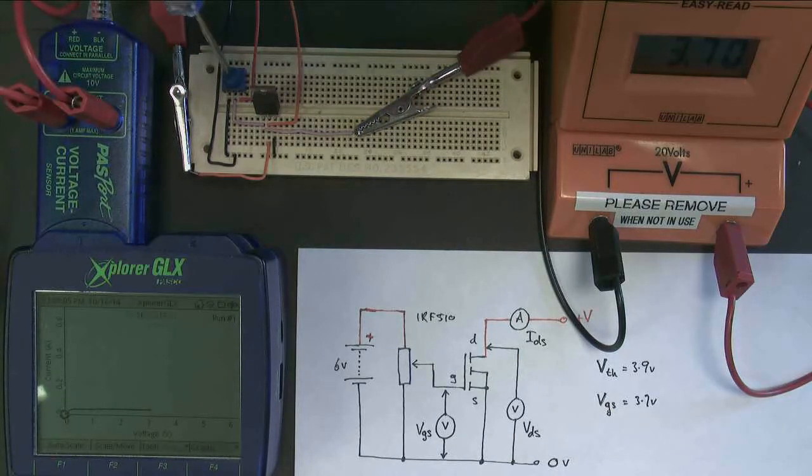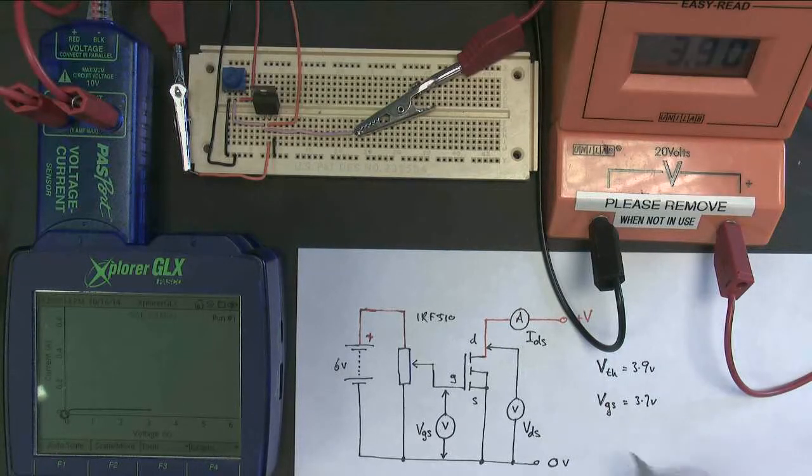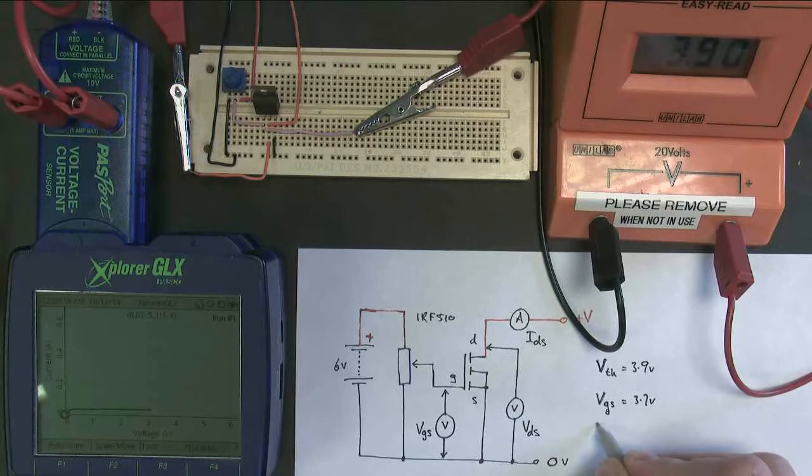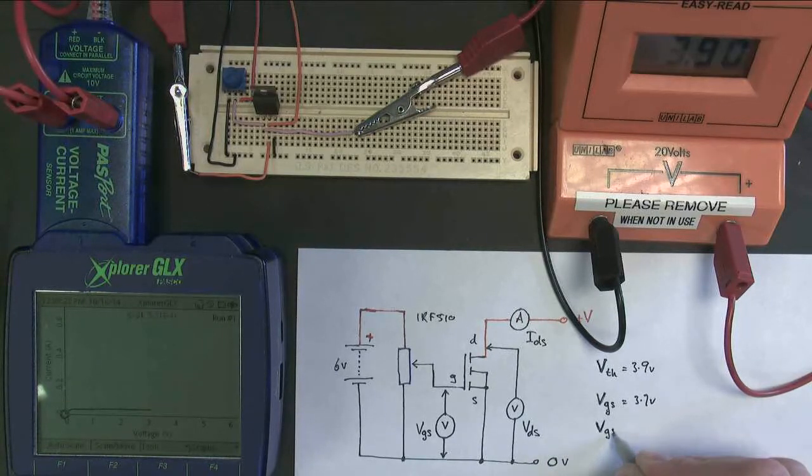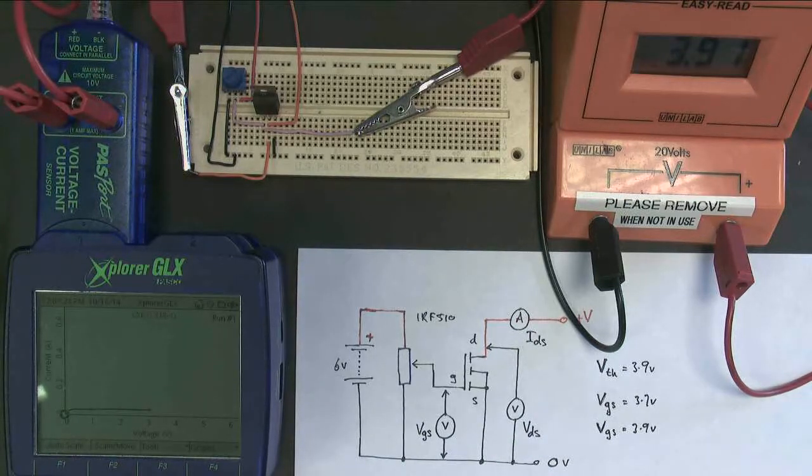Let's now try that experiment again. We're going to change the gate voltage. So we're going to what normally is the threshold voltage now, which is 3.9 volts. So let's just run this experiment again.